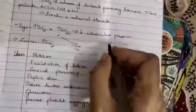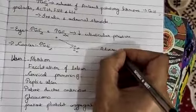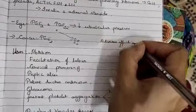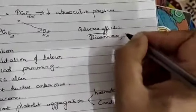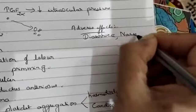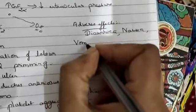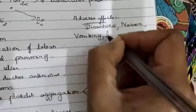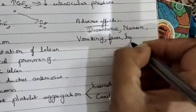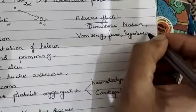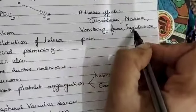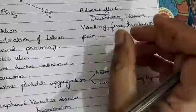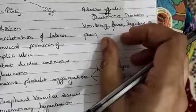Adverse effects are usually common adverse effects like diarrhea, nausea, vomiting, fever, hypertension, and pain. Normally pain is usually seen due to uterine contraction. So this is regarding prostaglandins.